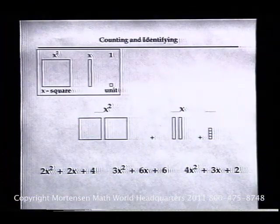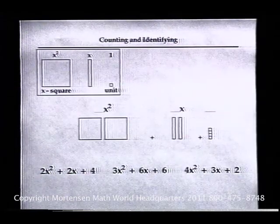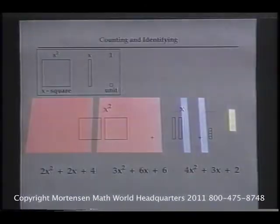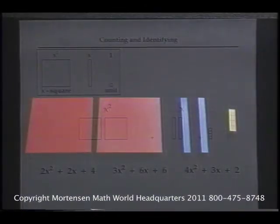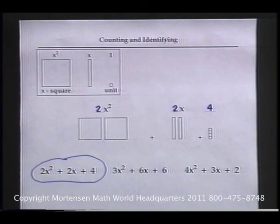Let's look at the example at the top of page three. You have already done this, so it will be easy for you. How many X-squares do we have? Two. How many X's? Two. How many units? Four. Which of the written algebraic expressions at the bottom of the problem does this represent? Right. The first one.